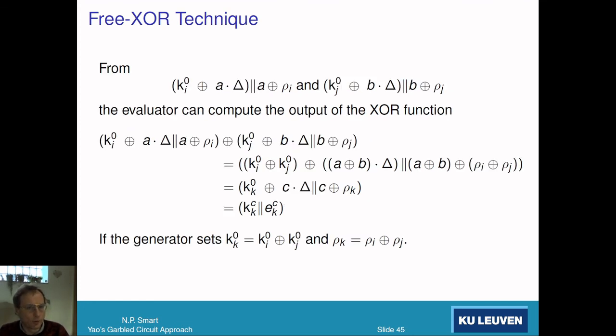The free-XOR technique: imagine we wanted to compute the XOR gate. This is the value of the string you get associated to y_i, this is the value for y_j. If you XOR these two strings together, you actually get the output of the XOR gate. So XORing the two strings gives you the string as the output of the XOR gate. There's no need to do a garbling for XOR gate - XOR is free. Given that a lot of circuits have huge numbers of XORs, we only have to compute the AND complexity of a circuit when looking at the complexity for garbled circuits.